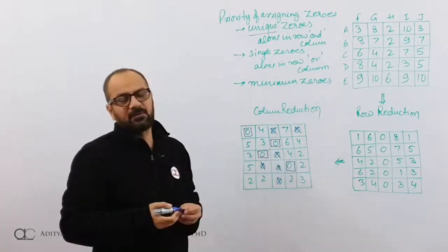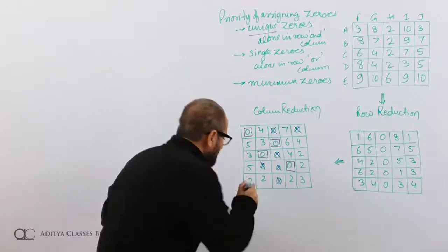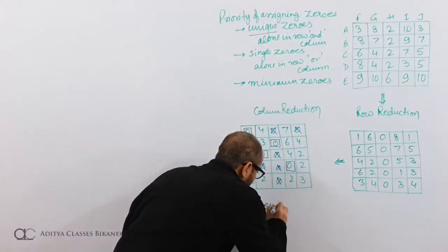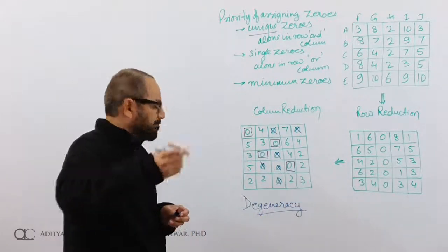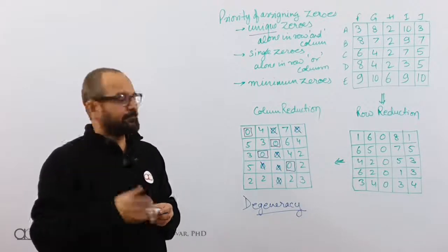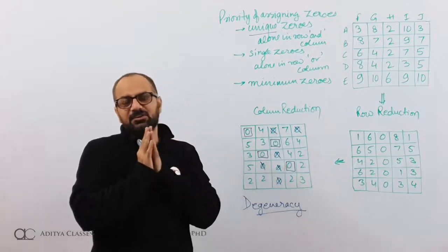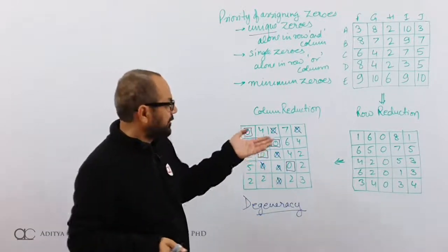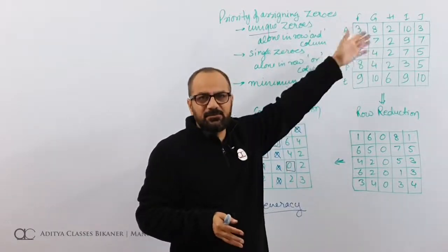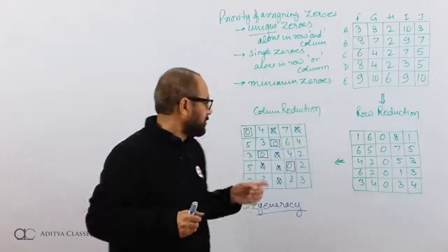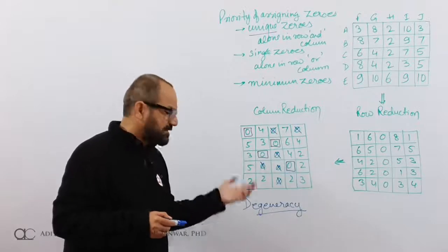So this is a case of degeneracy. A better solution might be possible, but my zeros are exhausted and I have not reached my optimum assignment. I need 5 assignments — there are 5 sources, 5 destinations, 5 machines, 5 jobs, 5 areas, 5 salesmen — but I have made only 4 assignments. So this is not an optimum assignment; it is a degenerate situation.